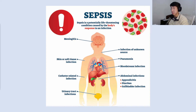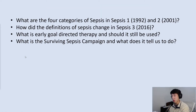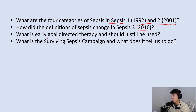Hey, it's Conan and I'm going to be talking about sepsis today in my Google image PowerPoint. Here are some pimp questions that you might be getting: What are the four categories of sepsis in Sepsis 1 (1992) and Sepsis 2 (2001), and how did these definitions change when Sepsis 3 came out in 2016? What is early goal-directed therapy and should we still be using it? And what is the Surviving Sepsis Campaign and what does it tell us to do? These are the main goals of this talk.